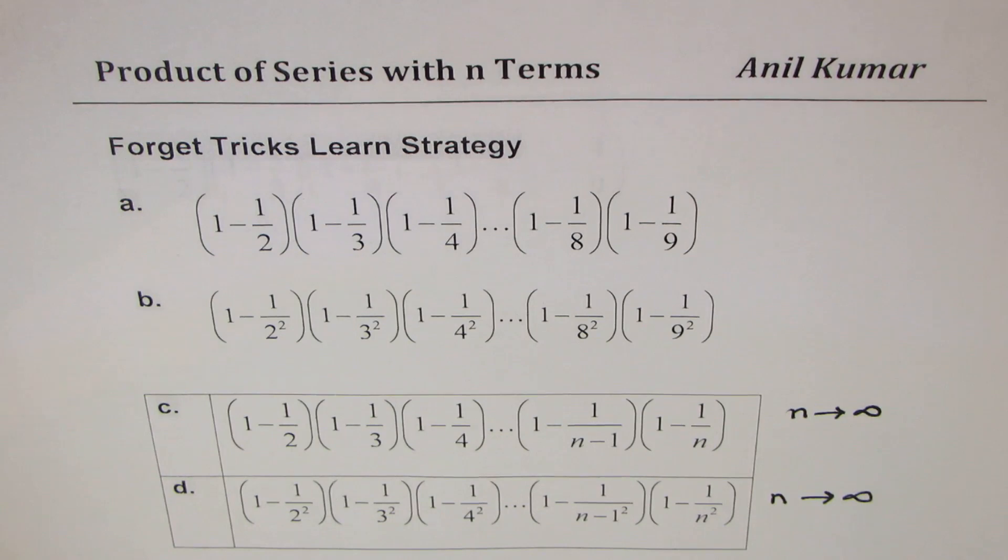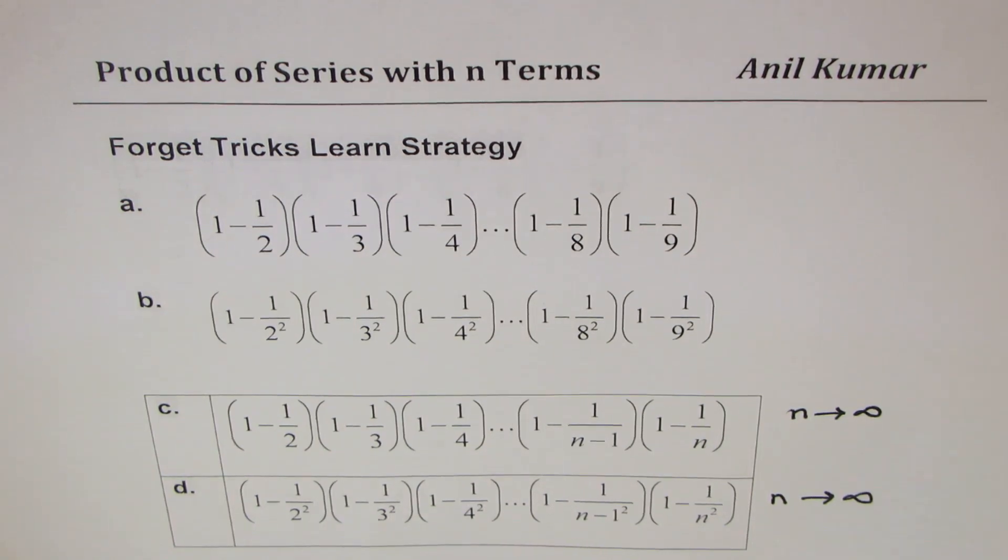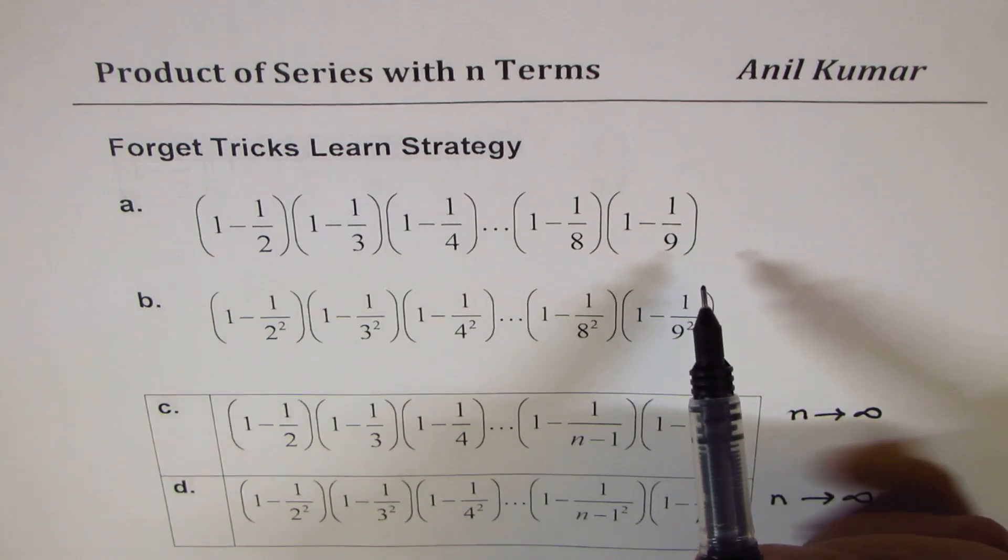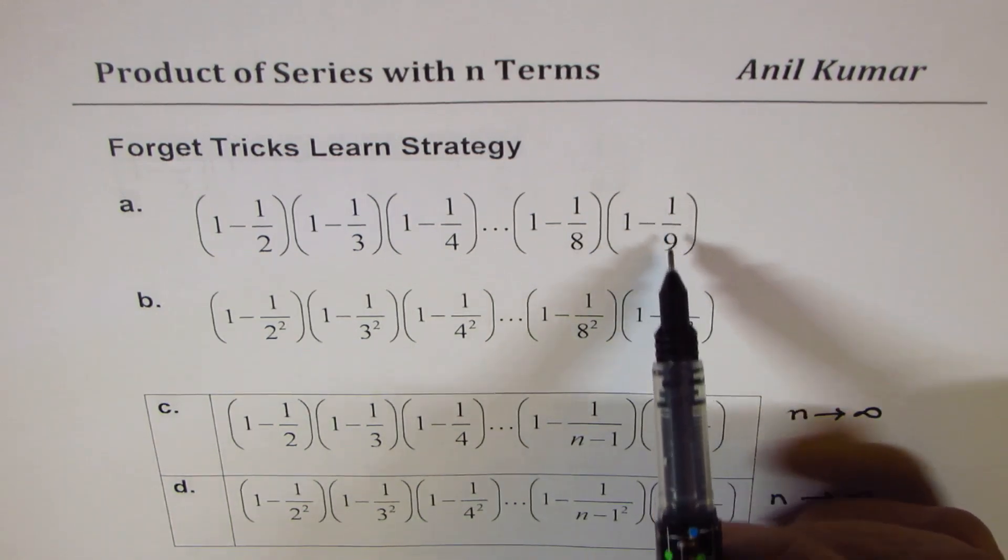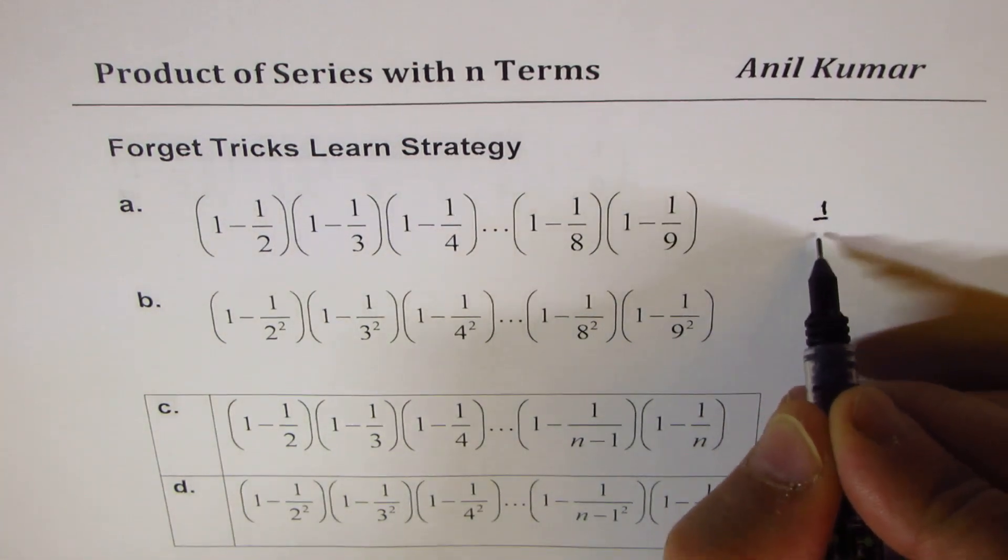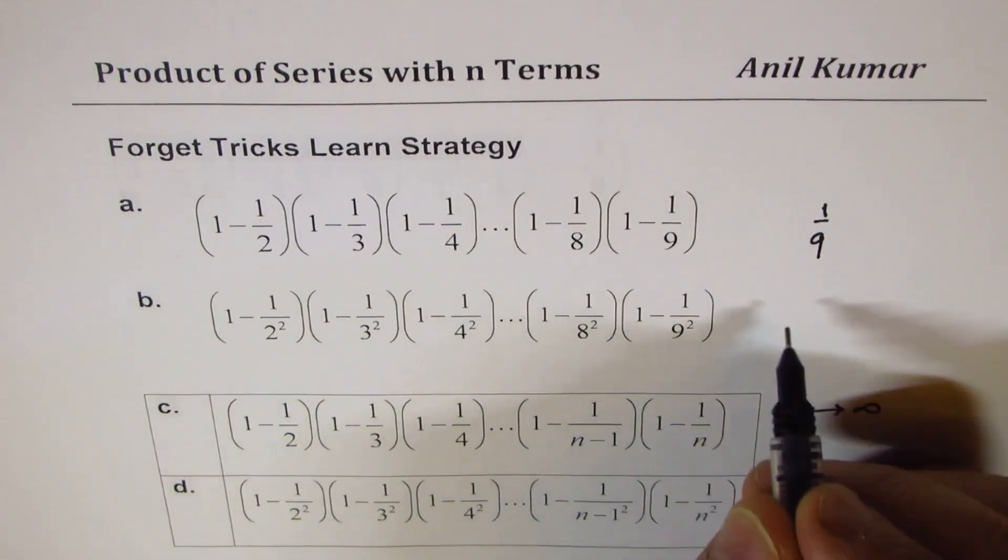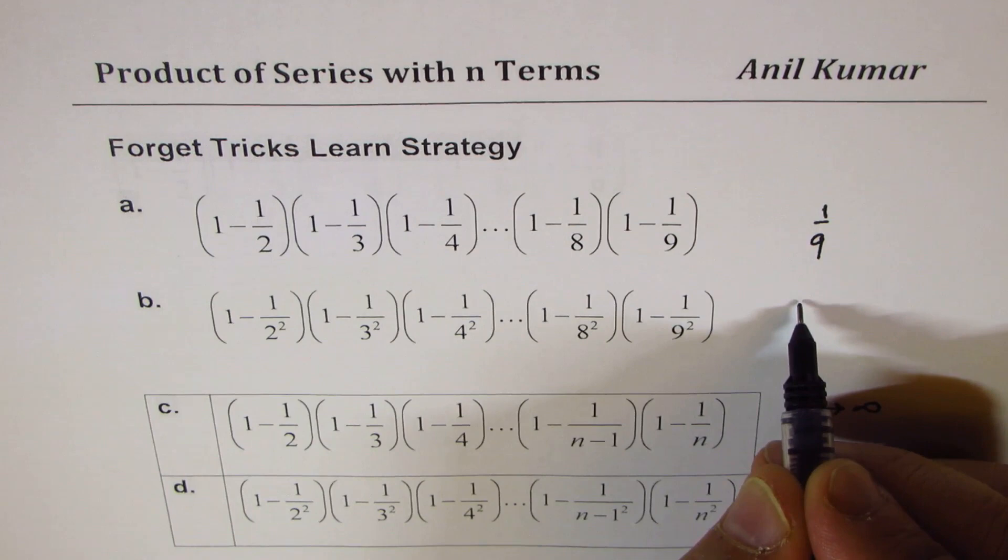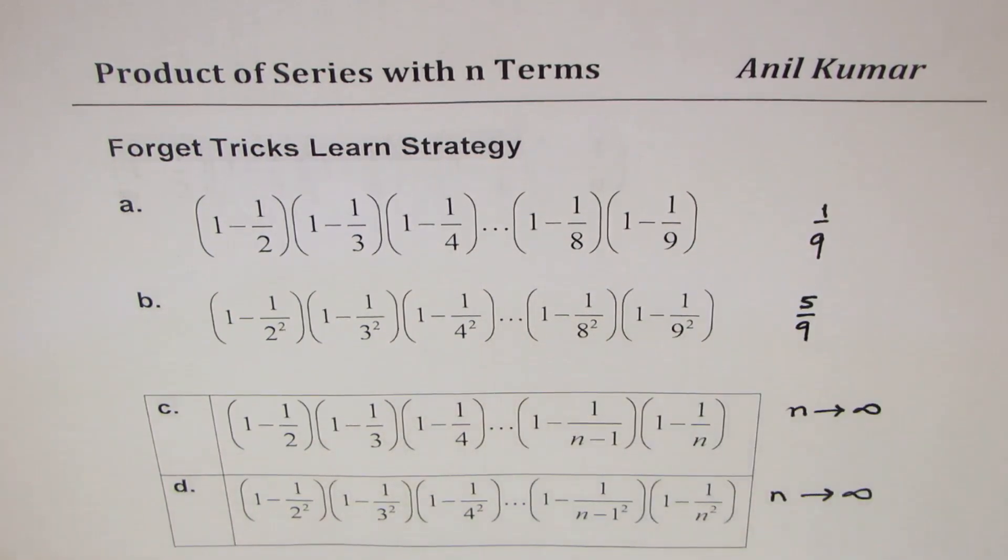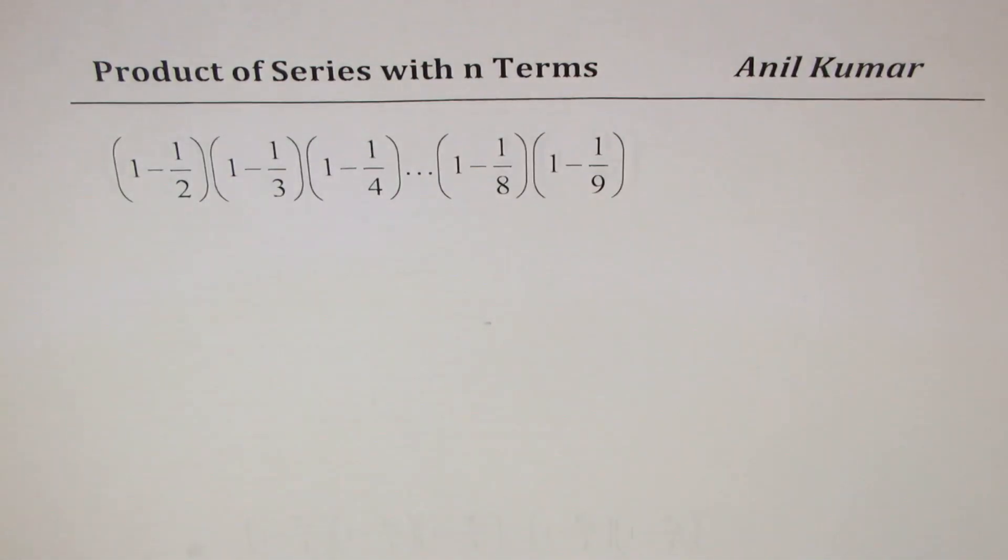And I hope these strategies will help you to answer questions quickly. Now, we do have solutions for these. Quick answer for this is 1 over 9. And the quick answer for this is 5 over 9. Let's see how do we get such answers.